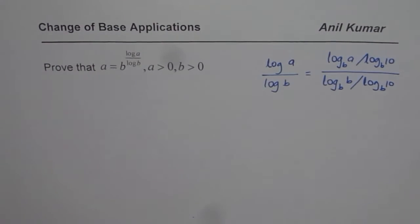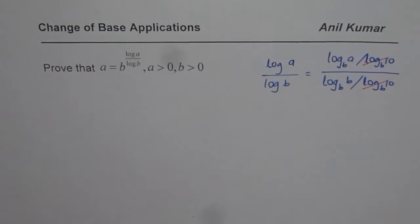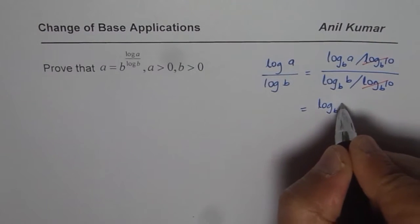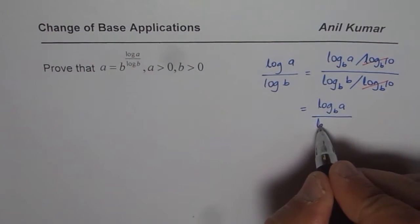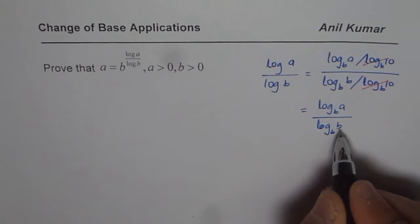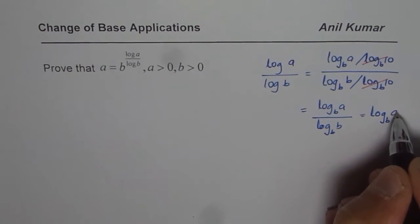Now clearly, log B of 10 will cancel out. And what we get here is log B of A divided by log B of B. And as you know, log B of B is 1, and therefore we get this equals to log B of A.